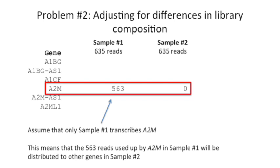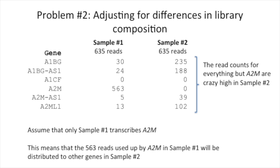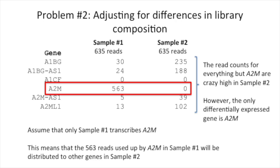Here we see that 563 reads of a total of 635 reads map to this gene in sample number one. This means that the 563 reads used up by A2M in sample number one will be distributed to other genes in sample number two. Here we see the read counts for all of the genes in sample number one and sample number two. The read counts for everything but A2M are crazy high in sample number two. However, the only differentially expressed gene is A2M.